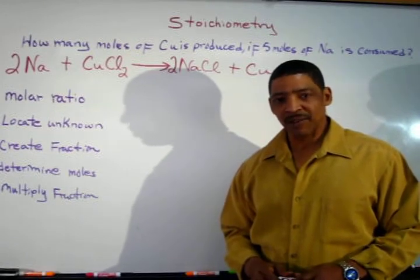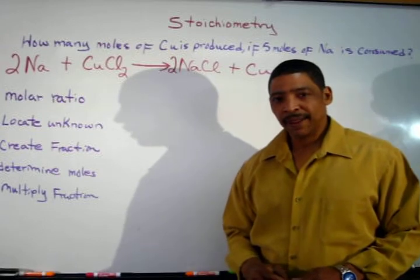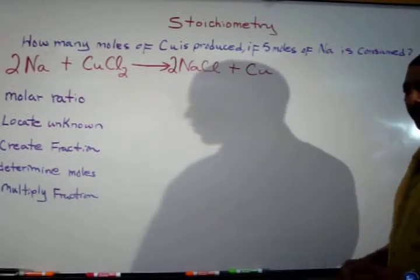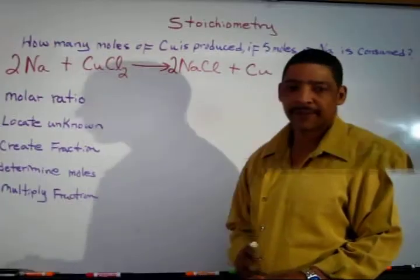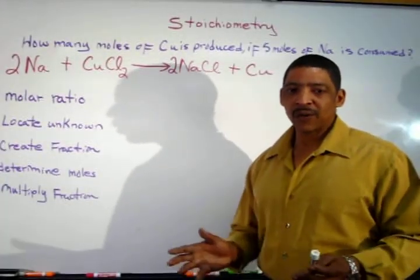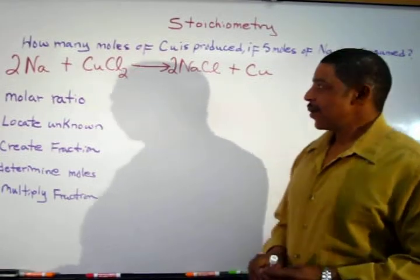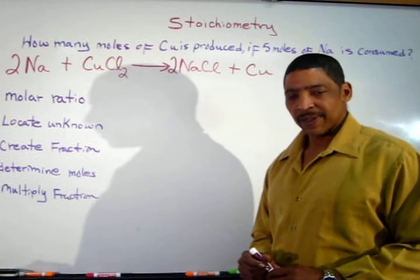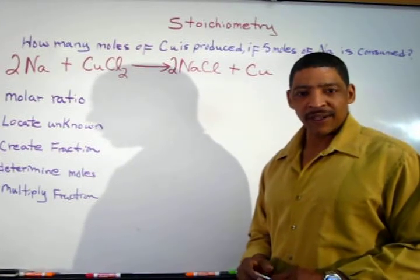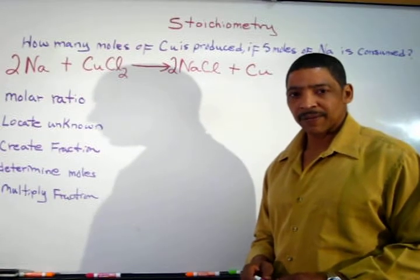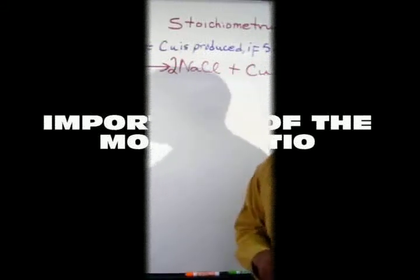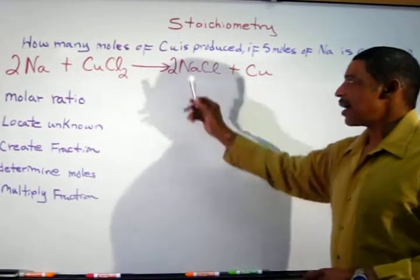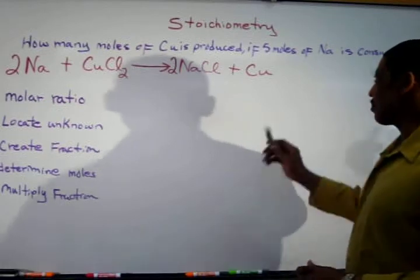The first practice problem is an example of a simple calculation. This question is asking how many moles of copper is produced if 5 moles of sodium is consumed. In this particular case we are already beginning with a balanced equation where the molar ratio is 2 to 1 to 2 to 1. From the balanced equation it is possible to create a fraction that relates the amount of sodium to the amount of copper.